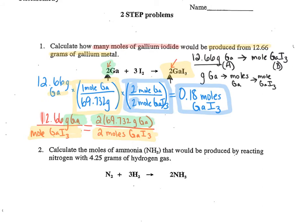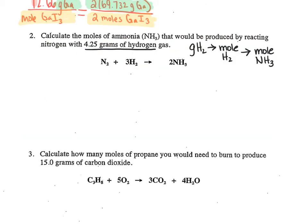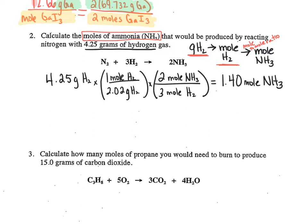On my next problem, I am given grams of H₂ — specifically 4.25 grams of H₂ — and it wants me to convert that to moles of ammonia. Starting with grams of H₂, I first find how many moles of H₂ that is, then use the mole-to-mole ratio from the coefficients of the balanced equation to find moles of NH₃. Here's my problem solved: my first step cancels out grams of H₂, and my next step cancels out moles of H₂ so my answer is in moles of NH₃.